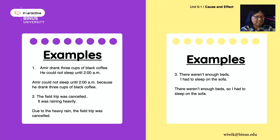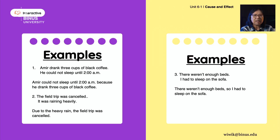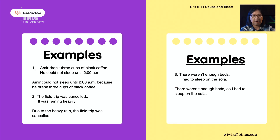The third one: There weren't enough beds. I had to sleep on the sofa. This time, please use so. Your sentence will be: There weren't enough beds, so I had to sleep on the sofa.